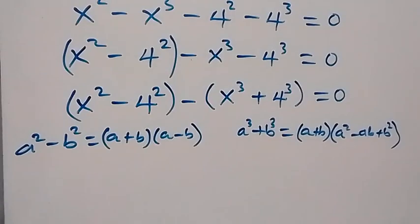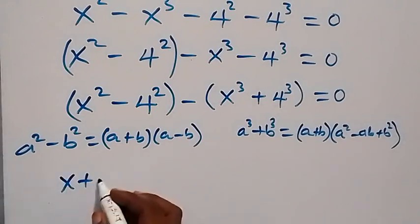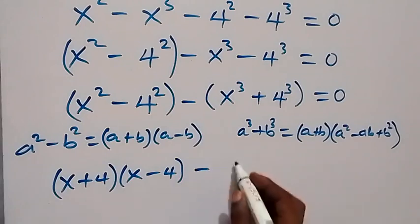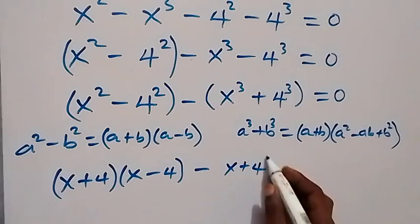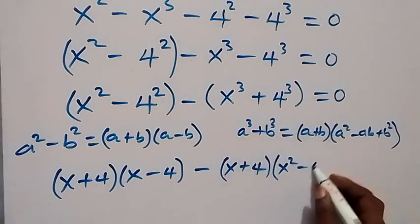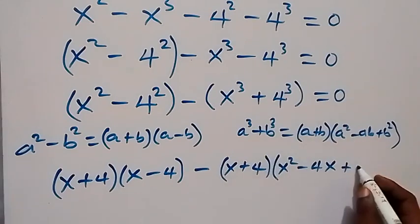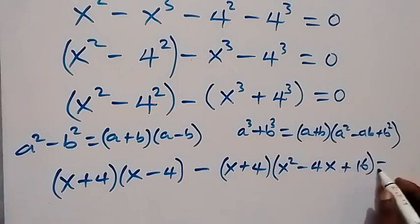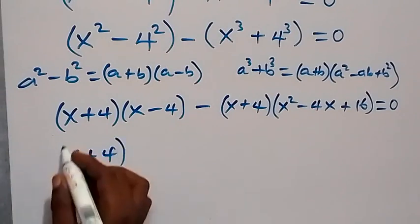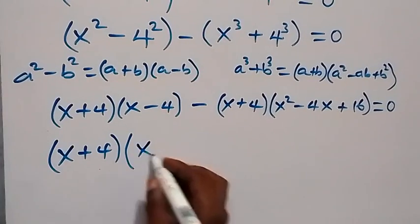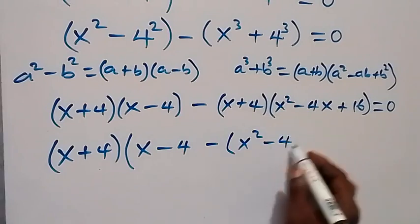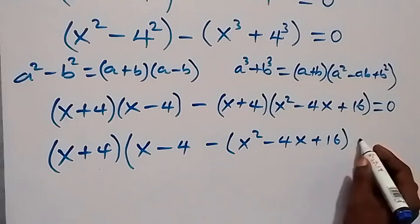When we apply these identities to each bracket: the first bracket becomes x plus 4 multiplied by x minus 4. Then we apply the sum of cubes to the second bracket, giving x plus 4 times x squared minus 4x plus 16. So open bracket: x minus 4, minus bracket x squared minus 4x plus 16, close bracket, equals 0.